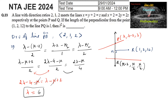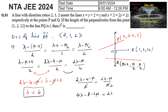Similarly, simplifying the second and third equations: (2λ - 4 - μ)/2 = (2λ - μ)/4 gives 4λ - 8 - 2μ = 2λ - μ, so 2λ - 8 = μ. Substituting λ = 6 gives μ = 2×6 - 8 = 4. So λ = 6 and μ = 4.